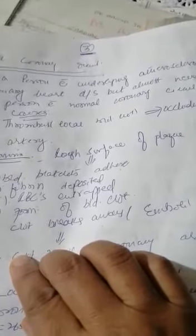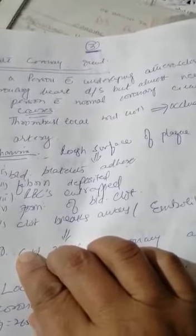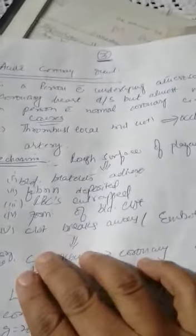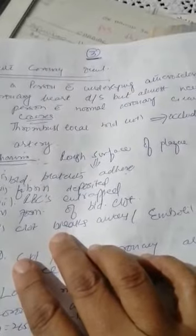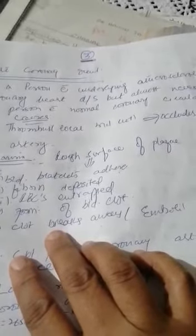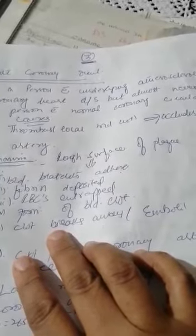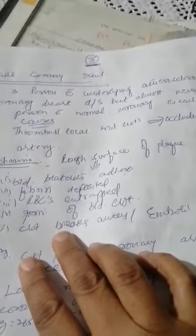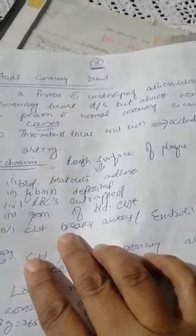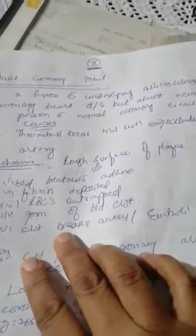A freely flowing thrombus is known as a coronary embolus in the coronary artery. The atherosclerotic plaque has a rough surface. When blood vessels have a rough surface, blood platelets undergo clot formation, fibrin is deposited.